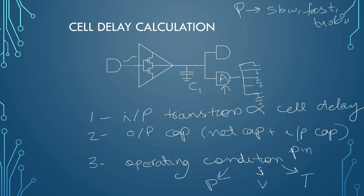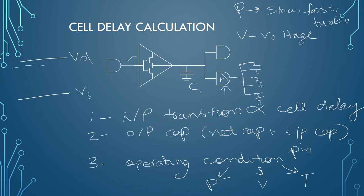Voltage also affects your cell delay. There are two operating ranges: VD and VS, that is power to ground. If you are operating at lower than normal voltage, you are stressing your device, and your cell delay will increase because it is operating at less than the normal applied voltage.